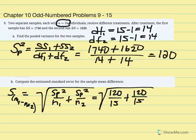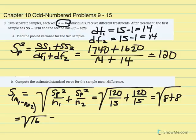Remember, in this case we have equal sample sizes, but that isn't always the case, which is why it's necessary to calculate pooled variance. Taking these as separate fractions, 120 divided by 15 equals 8, so 8 plus 8 equals 16. The square root of 16 equals 4. So our estimated standard error of the mean difference is 4.